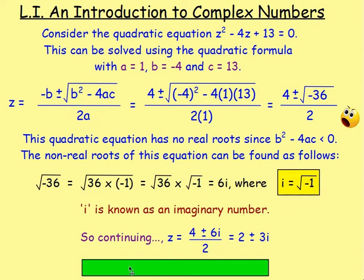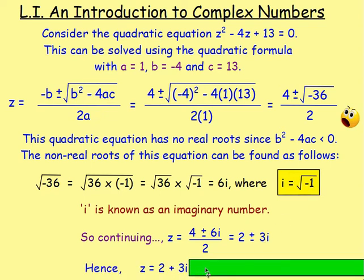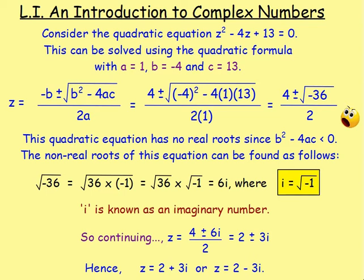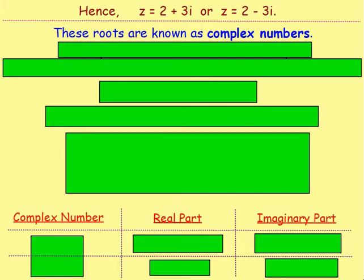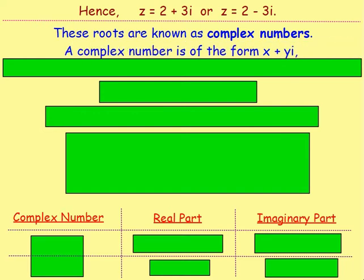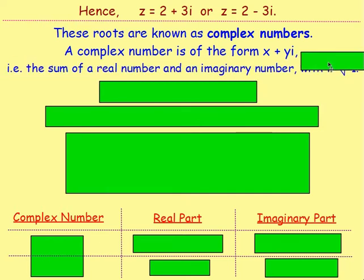i is known as an imaginary number, which means z = 2 + 3i or 2 − 3i as your imaginary roots — known as complex numbers. The results are known as complex numbers. A complex number is always of the form x + yi: the sum of a real number and an imaginary number, where i = √(−1).